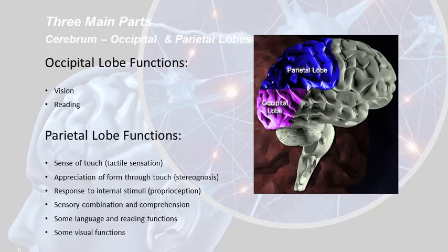Moving back on the surface of the cerebrum, we have the occipital lobe and the parietal lobe. The occipital lobe is at the very back of the brain, mostly associated with vision and reading. The parietal lobe, right behind the frontal lobe, is involved in the sense of touch, the appreciation of form through touch — so you feel a ball or a pyramid or a block, you can tell. Response to internal stimuli, proprioception, sensory combination, comprehension — and this area is really greatly affected by LSD and the hallucinogens.